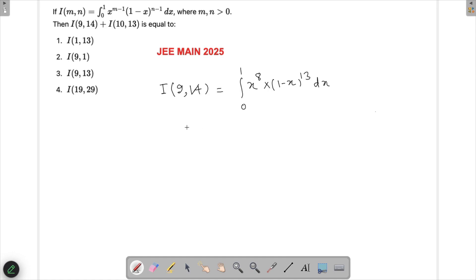The second expression is simply I(10,13). If I write this down, I would get this as 0 to 1, and then this will be x raised to the power 9 into 1 minus x raised to the power 12.